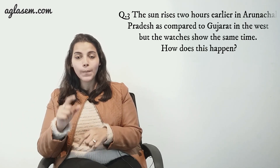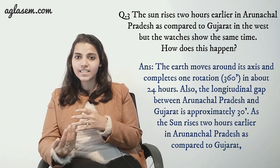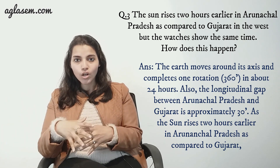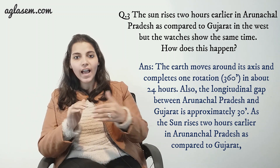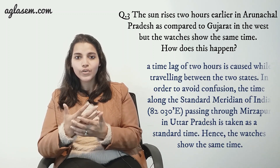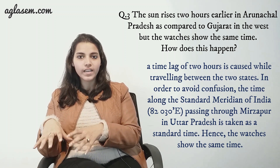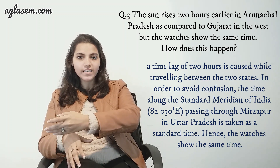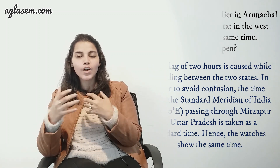Question number three: the sun rises two hours earlier in Arunachal Pradesh as compared to Gujarat in the west, but our watches show the same time. How does this happen? The earth moves around its axis and completes one rotation in about 24 hours. The longitudinal gap between Arunachal Pradesh and Gujarat is approximately 30 degrees, causing a time lag of two hours. In order to avoid this confusion, the time along the standard meridian of India, which is 82 degree 30 minutes east passing through Mirzapur, is taken as the standard time. Hence, this is why our watches show the same time.